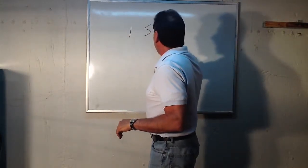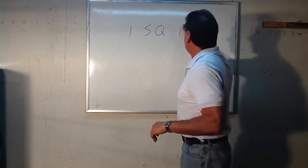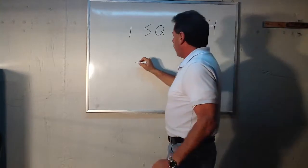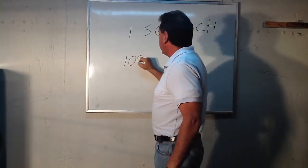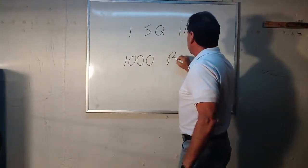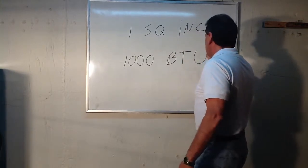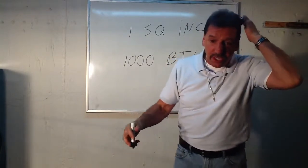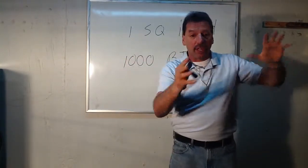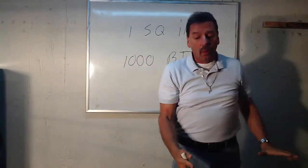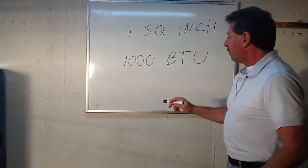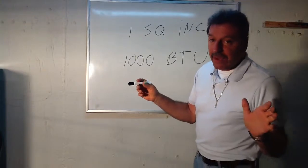One square inch for every thousand BTUs. Now, if you have a boiler hidden in a room and it's a hundred thousand BTUs, you need two openings, one up high, one down low so it can breathe. One square inch per thousand BTUs. That's not much. If you have a hundred thousand BTU boiler...